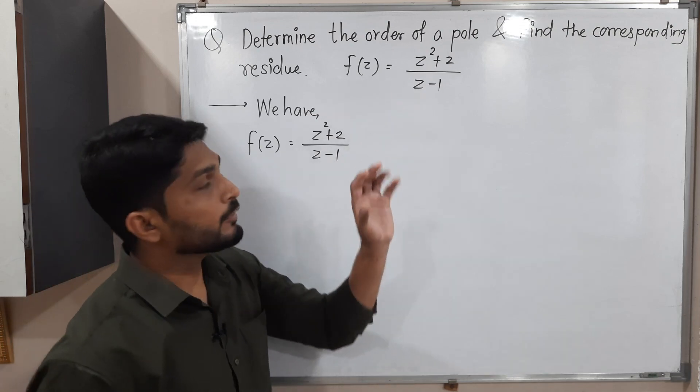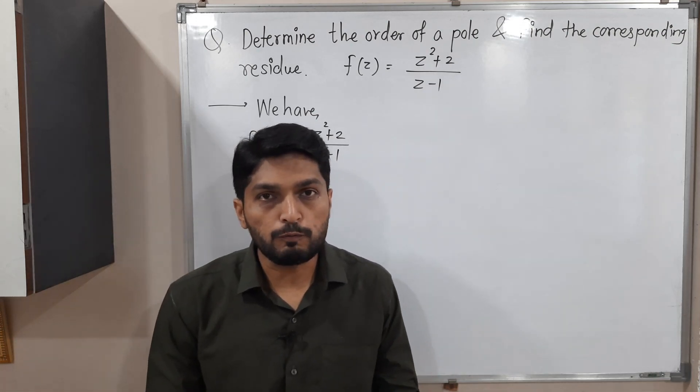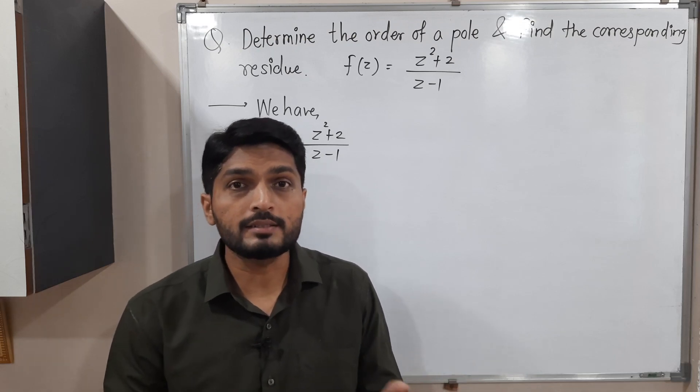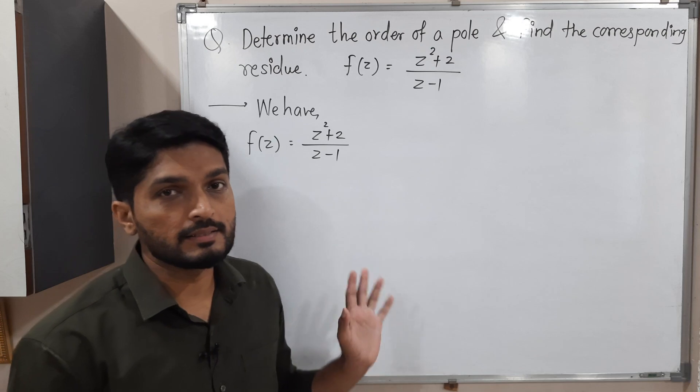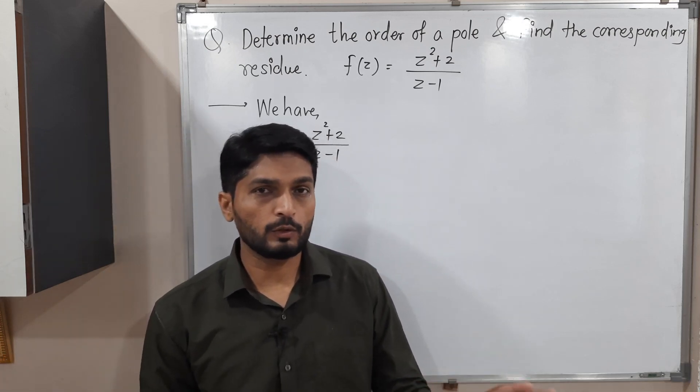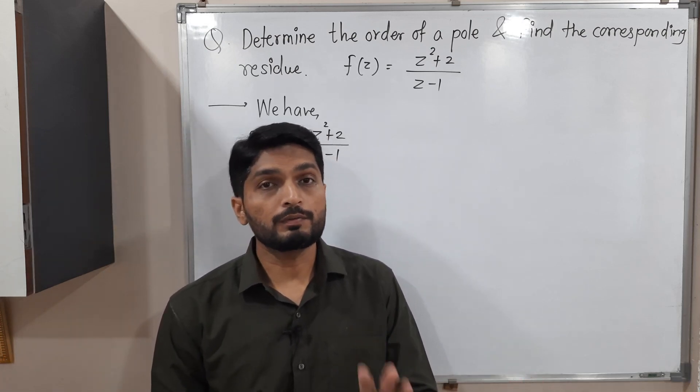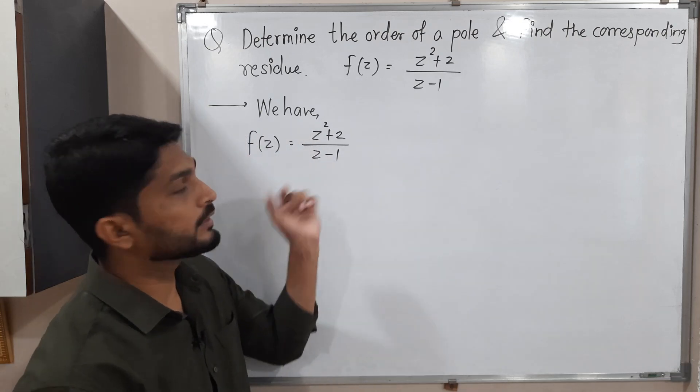So after that, we have to find order of poles. We are familiar with the definition of pole, which involves Laurent series expansion. But when you have very simple example like this, no need to go for Laurent series expansion. What will I do? Simply, I will observe the denominator.